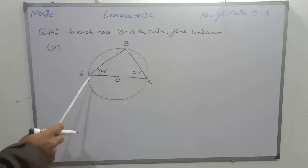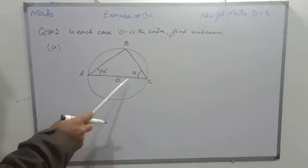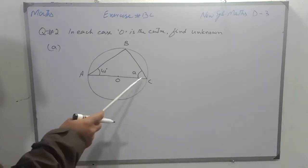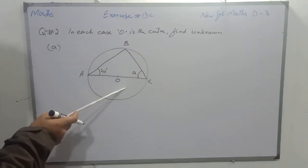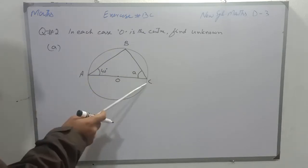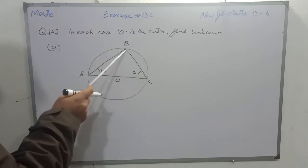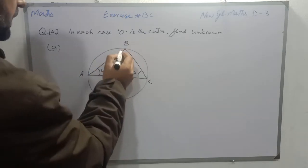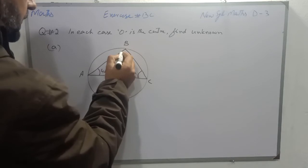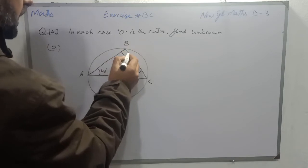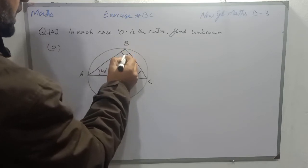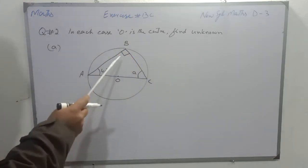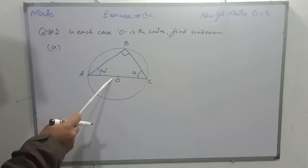Students, A, O, C is the diameter — meaning it is a semicircle. And angle ABC is an angle on the semicircle.